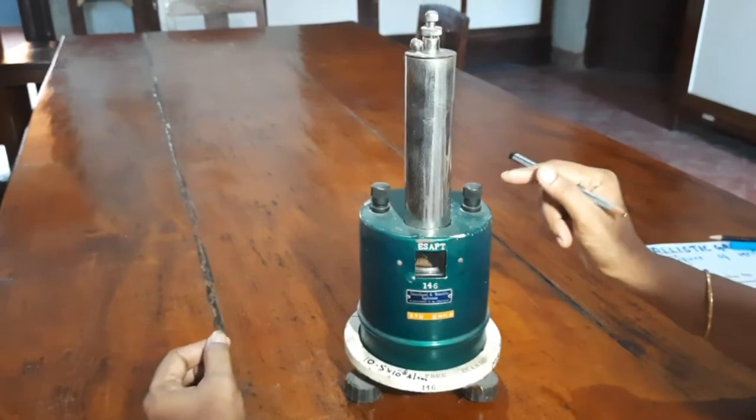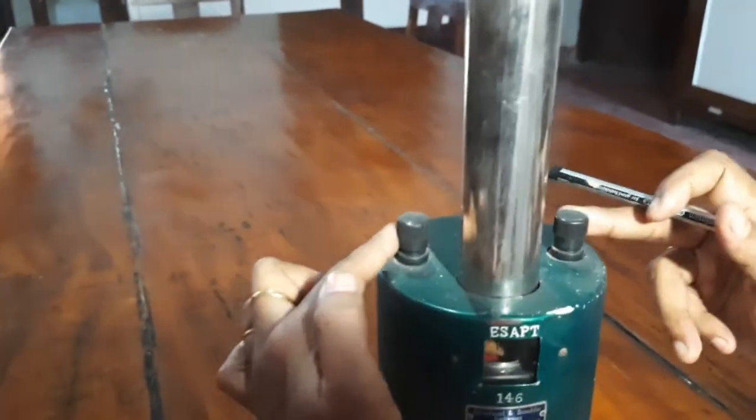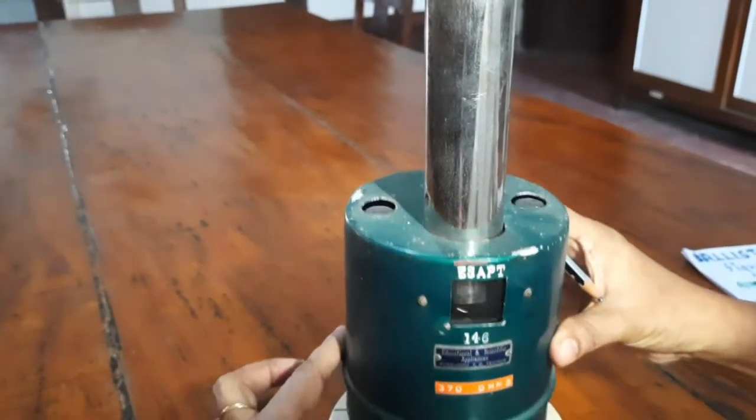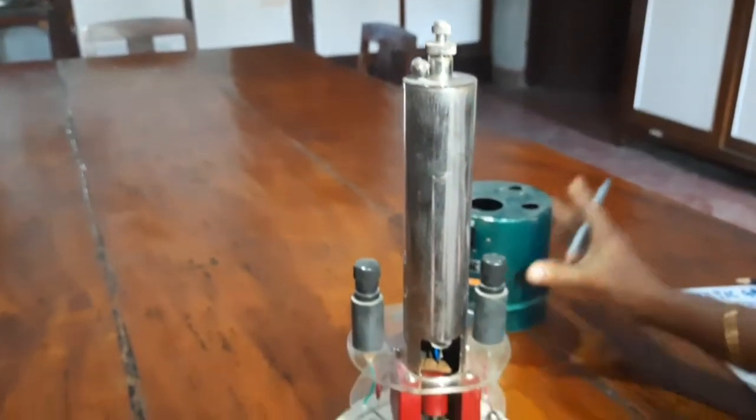This is the BG. These are the two connection points of the BG. I will just remove the cap and you can have a look of the situation here.